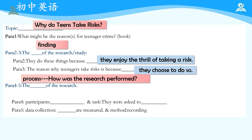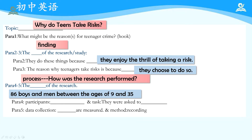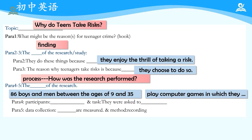Paragraph 4 and 5 are about the process, in other words, how the research was performed. According to paragraph 4, the participants are boys and men between the ages of 9 and 35, and they were asked to play computer games. As for data collection，数据收集，这里收集的是关于参与者满意程度的信息——to what extent are they satisfied or unsatisfied toward the result of the game. Emotional responses are measured here, and the method is recording.